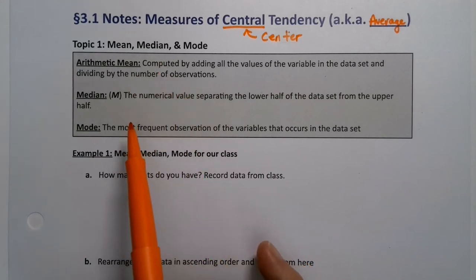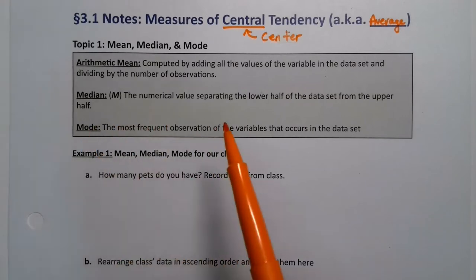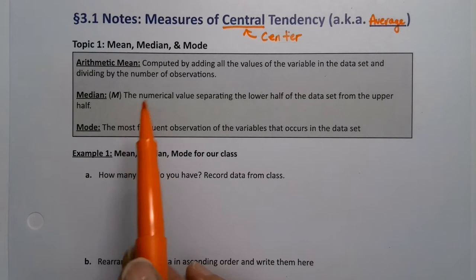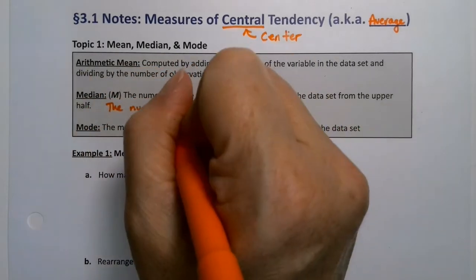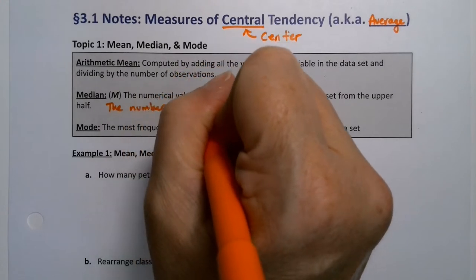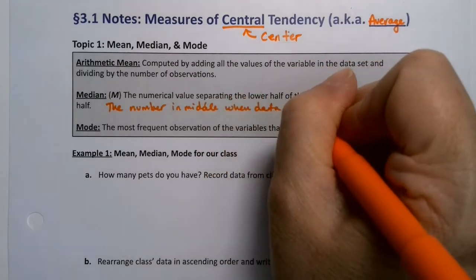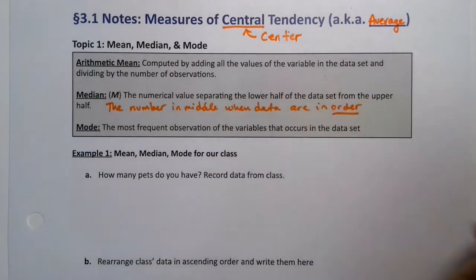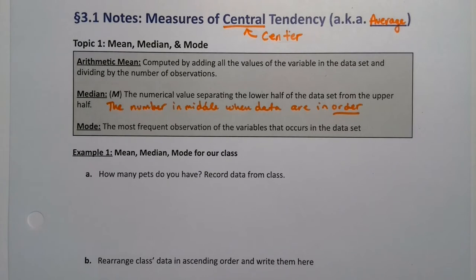The median is the numerical value that separates the lower half of the data set from the upper half — it's the number in the middle when the data are in order. So you first put your data set in order, and then you can find the middle number. The mode is whichever value occurs most often.